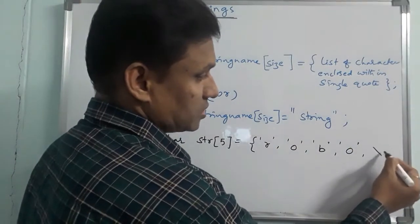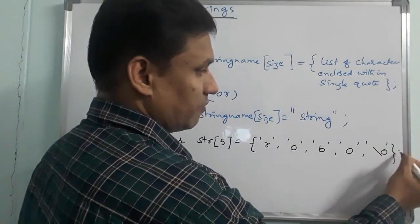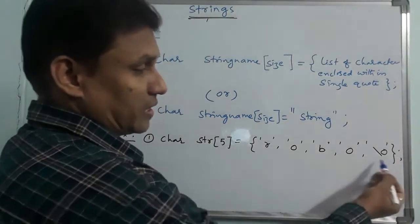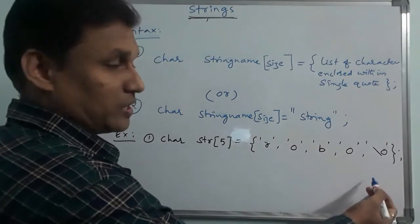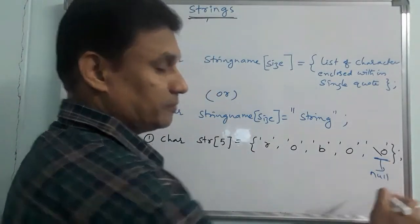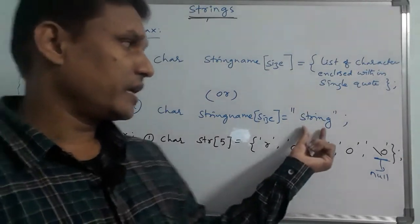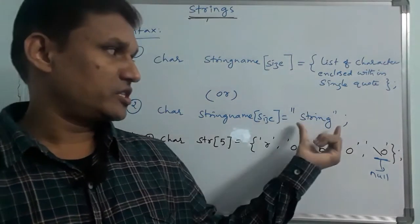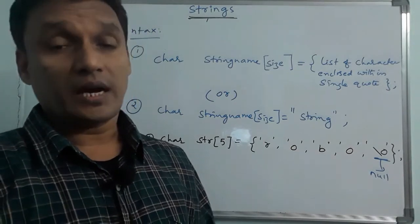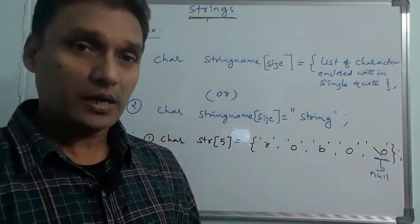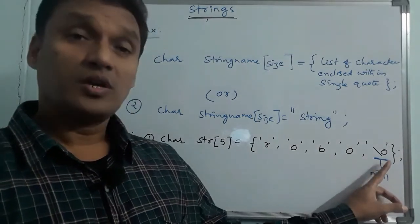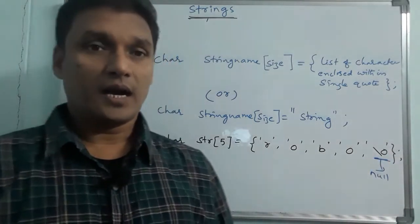When characters are enclosed in single quotation, the null character is added at the last position by the compiler. With double quotation, characters are assigned and the compiler automatically appends the null character. But in the first syntax with single quotation, the null character at the last position must be explicitly included.